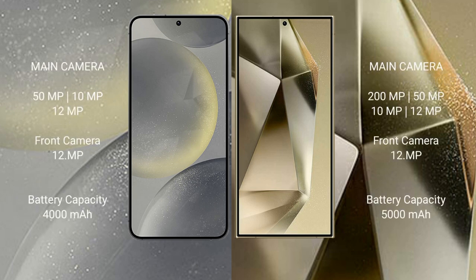The Samsung S24 runs on a triple camera setup: 15.5MP, 10.5MP, and 12.5MP, with a 12.5MP front camera. The Samsung Galaxy S24 Ultra has a quad camera setup: 200MP plus 15.5MP plus 10.5MP plus 12.5MP, with a 12.5MP front camera.